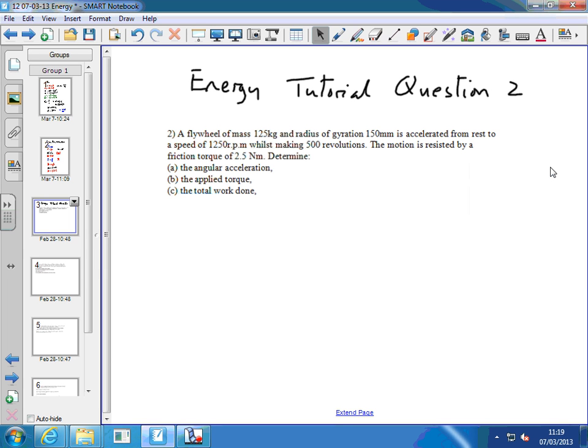So this tutorial question number two then. I'd like to approach it by thinking about the plan of action. And we'll find when we do this that actually the way the question's been written helps you with this plan of action. It actually says find the angular acceleration, find the applied torque, and therefore find the total work done. But in an engineering situation, the last bit is what we're interested in. We're interested in finding the total work done. Parts A and B are there just to help guide you through the plan.